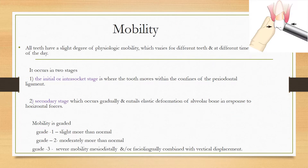Coming to mobility: all teeth have a slight degree of physiological mobility, which varies for different teeth at different times. It occurs in two stages. The first is movement within the socket, where the tooth moves within the confines of the periodontal ligament. The second stage occurs gradually and entails elastic deformation of alveolar bone in response to horizontal forces.